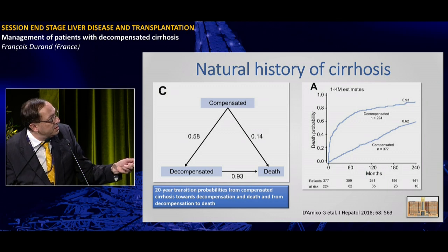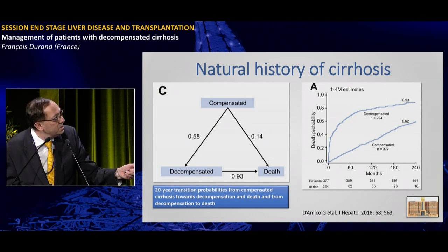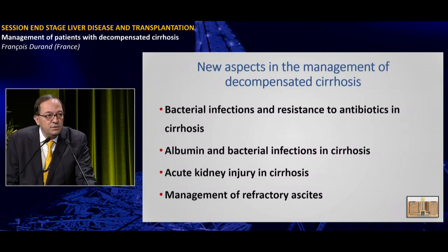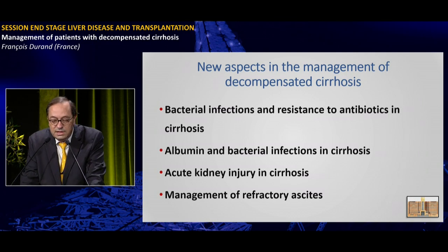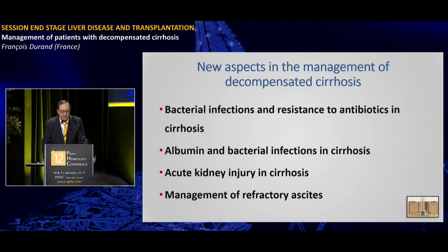Mortality rate is significantly higher in patients with decompensated cirrhosis, and the difference appears very early. I will focus my talk on four topics: bacterial infections and resistance to antibiotics in cirrhosis, albumin and bacterial infections in cirrhosis, acute kidney injury in cirrhosis, and management of refractory ascites.